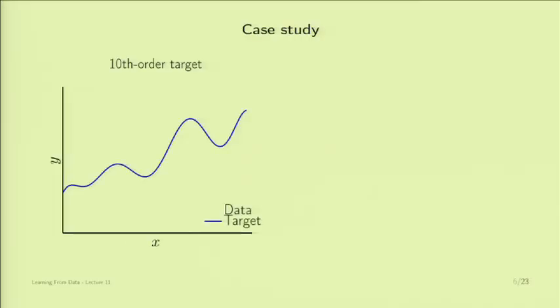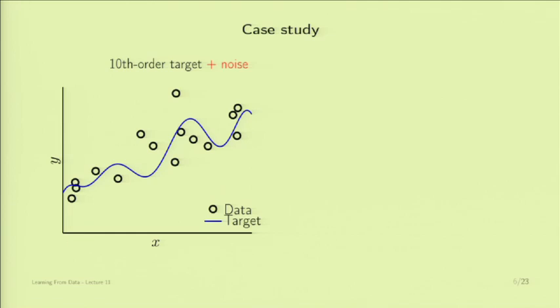Let's look at a case study to see how noise affects the situation. I'll start with a 10th-order target—a 10th-order polynomial on the real numbers with a scalar input. One example is a fairly elaborate function. We generate 15 data points, and the data will be noisy since we want to investigate the impact of noise on overfitting. The points are not lying perfectly on the curve, so there is noise contributing to them.